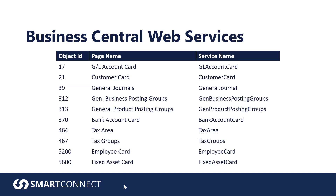Within Business Central, we'll need to go ahead and set up these web services. What I'm going to do is go through how to set up the first one. You can see object ID is number 17. The page name we're looking for is GL Account Card, and we want to publish that service as GL Account Card — and that capitalization is actually pretty important. I'm going to walk you through the setup of the first one, and then I'll bring back up this slide so you can pause the video and go through and set up the rest.